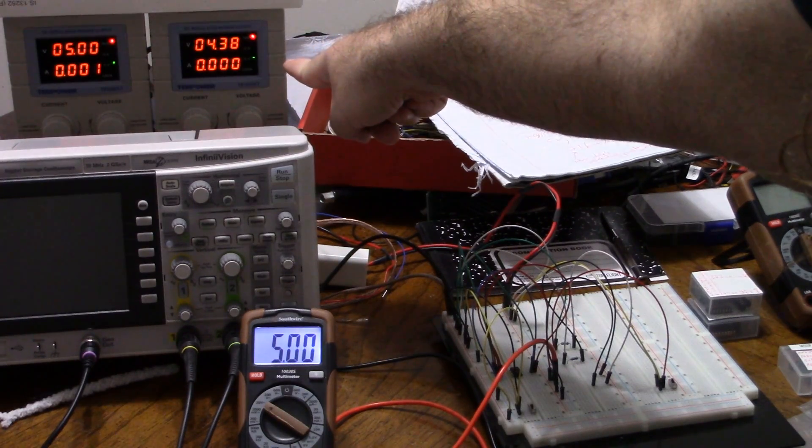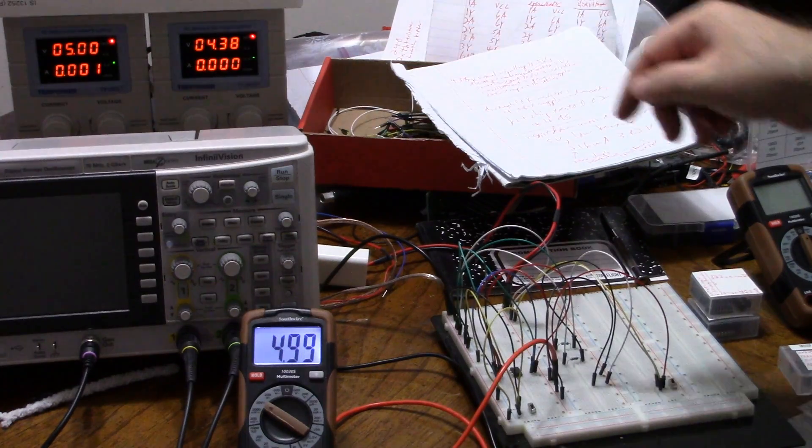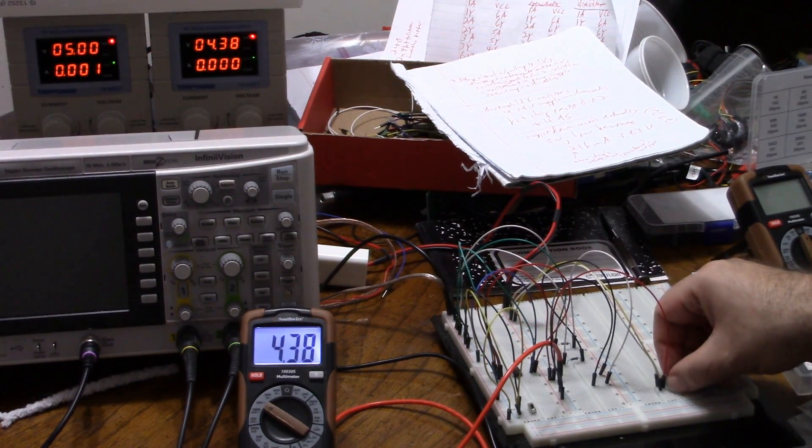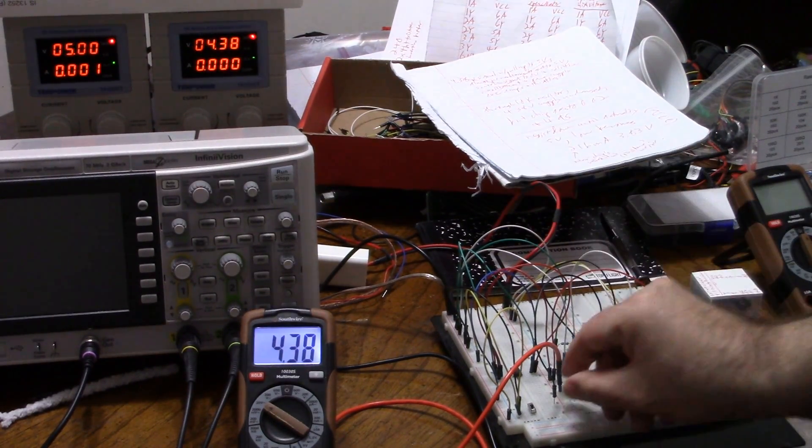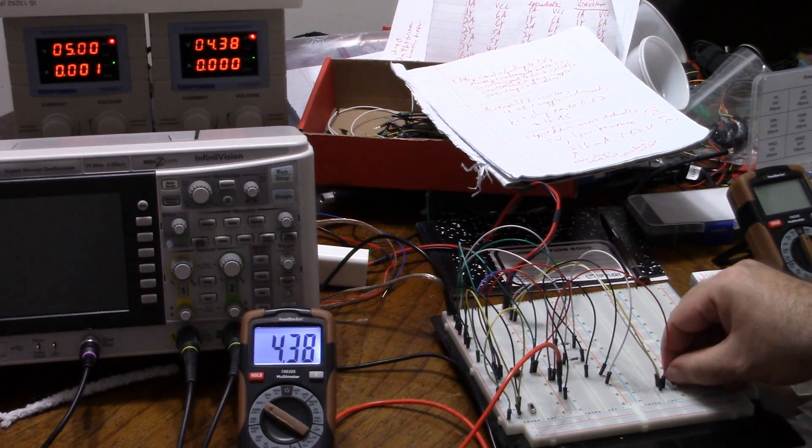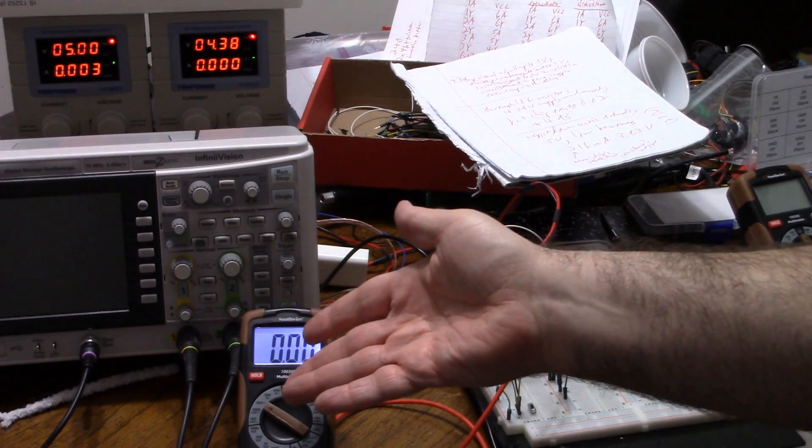But hold on now. Here's a 4.38 volt signal, exactly the same as the op-amp was putting out. Let's measure that instead. 4.38 volts and 0 volts. So what if I put the 10K pull-up resistor on that? We have 4.38 volts and we have 0 volts. Nothing happened.